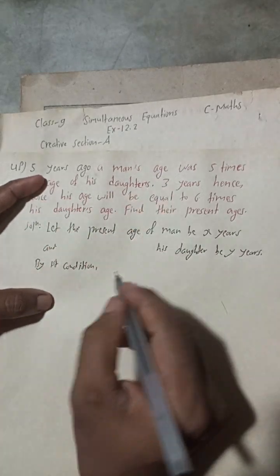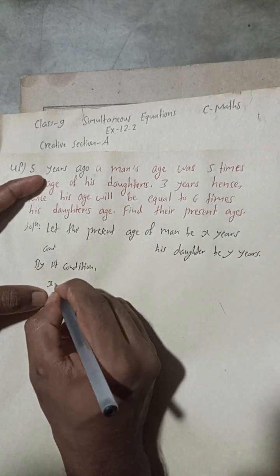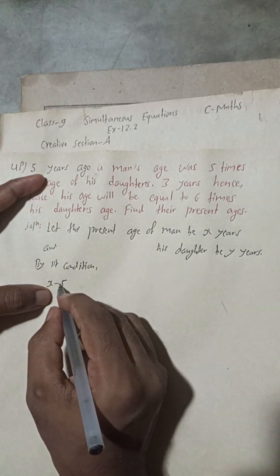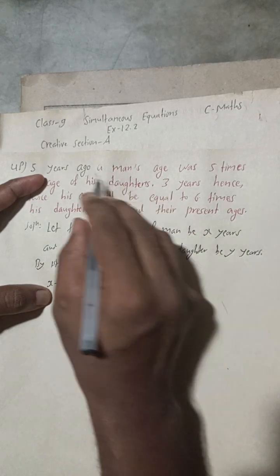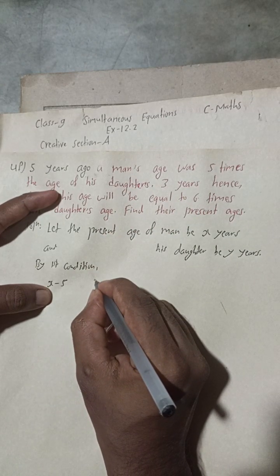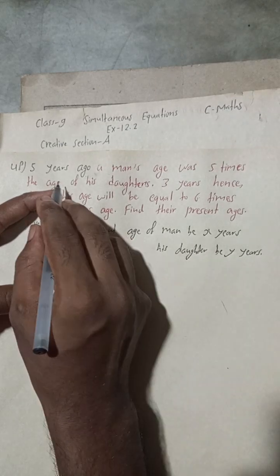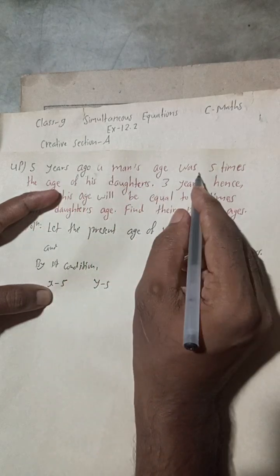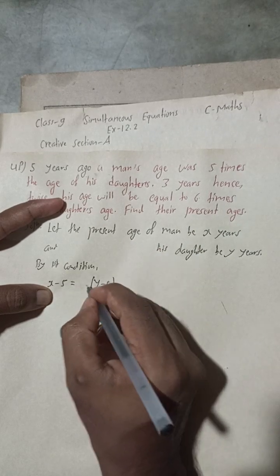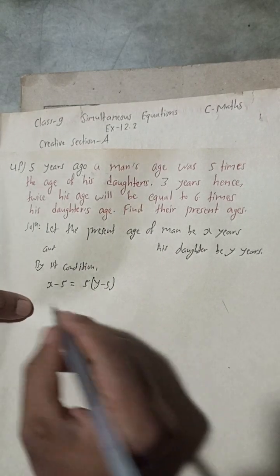By the first condition: five years ago the age of the man was x minus 5, and five years ago the age of his daughter was y minus 5. The condition states that five years ago a man's age was equal to five times the age of his daughter.